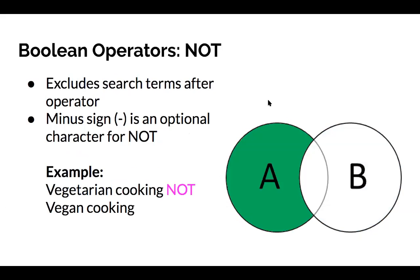The third operator, NOT, will exclude any search terms after it. For example, searching for 'vegetarian cooking NOT vegan cooking' will retrieve results pertaining only to vegetarian cooking and leave out anything that may contain overlap between the two topics. Like AND, the minus sign is an optional character that can be used in place of NOT.